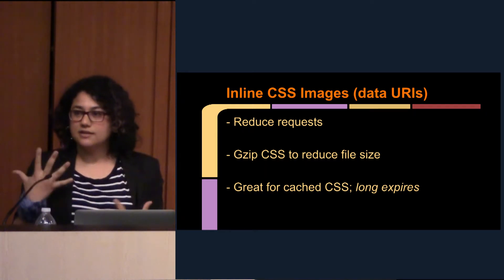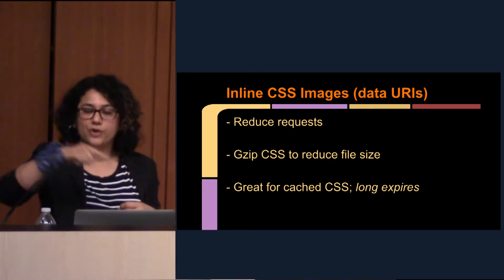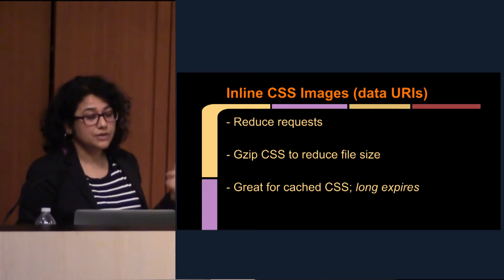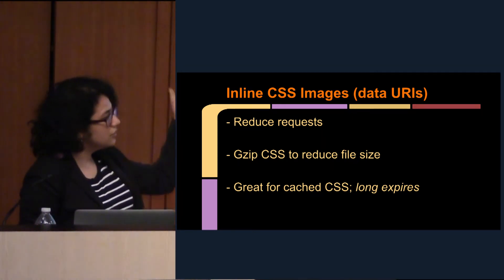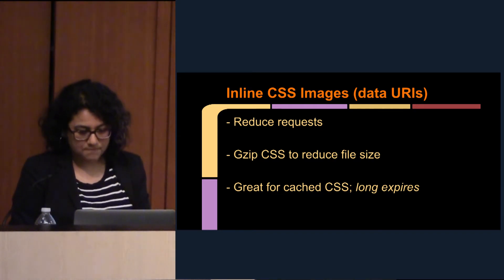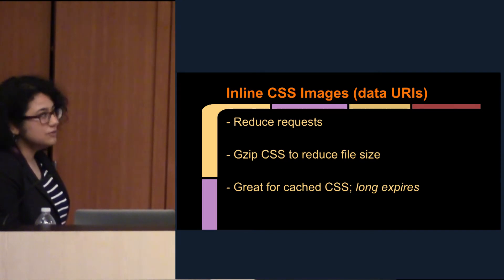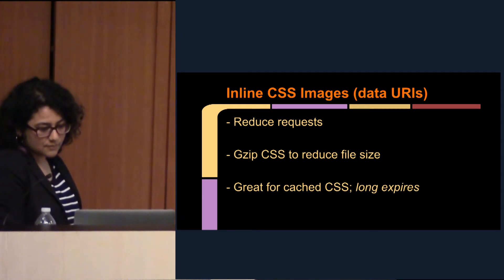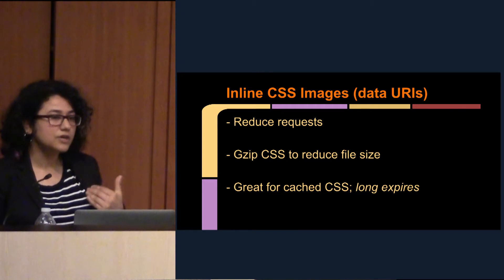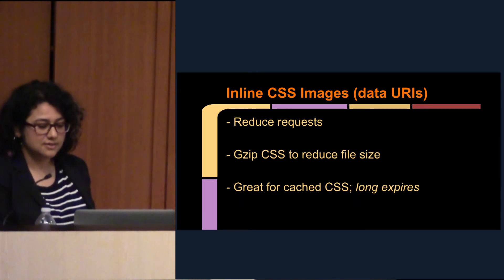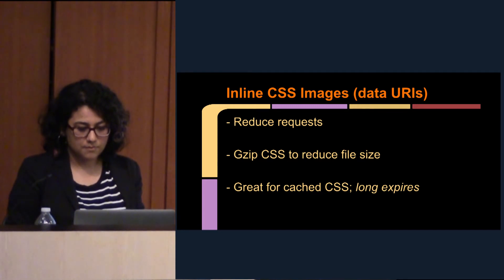Inline CSS images. That's another way you can reduce your page load. One of the key bottlenecks of pages is the requests that go out for resources and assets in CSS. If you use data URIs — which is basically converting your binary image into base64 code and then embedding it in the CSS — you're going to make one less request. So instead of a normal background image URL, it would just basically be the inline base64 string. There are tools online where you can upload your PNG, get the base64 output, and place it in your CSS.